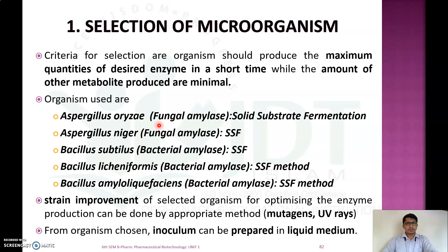Aspergillus aureus for fungal amylase by solid substrate fermentation, Aspergillus niger for fungal amylase also by solid substrate fermentation, Bacillus subtilis for bacterial amylase by SSF, and Bacillus licheniformis and Bacillus amyloliquefaciens. After selecting the microorganism, we can improve the strain using mutagens or UV rays.